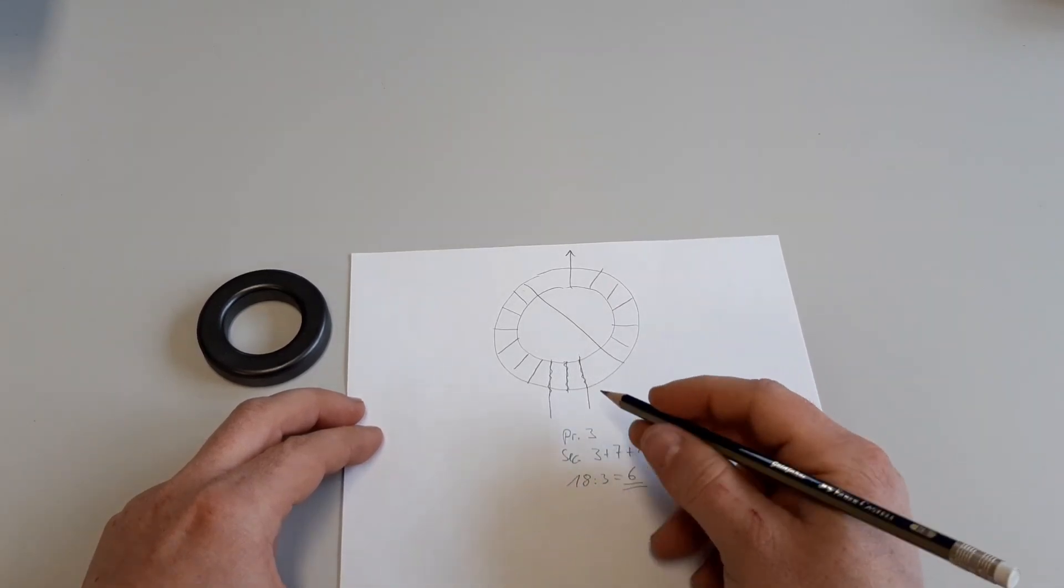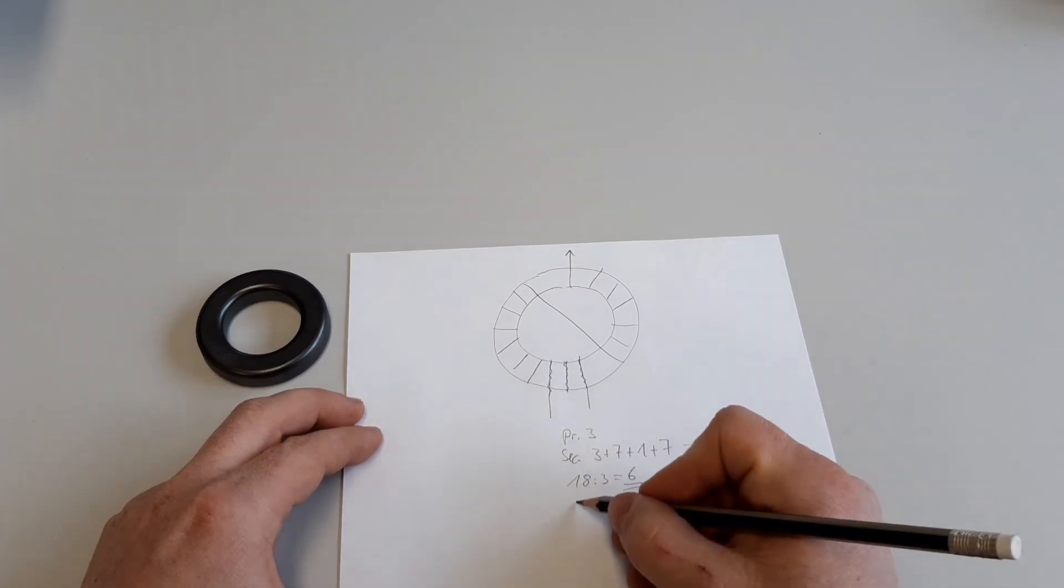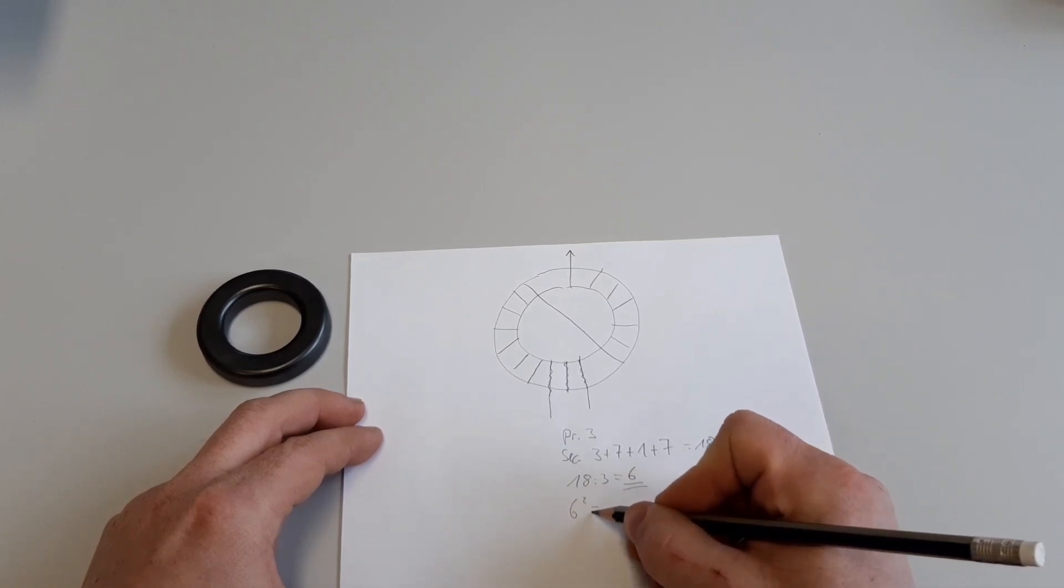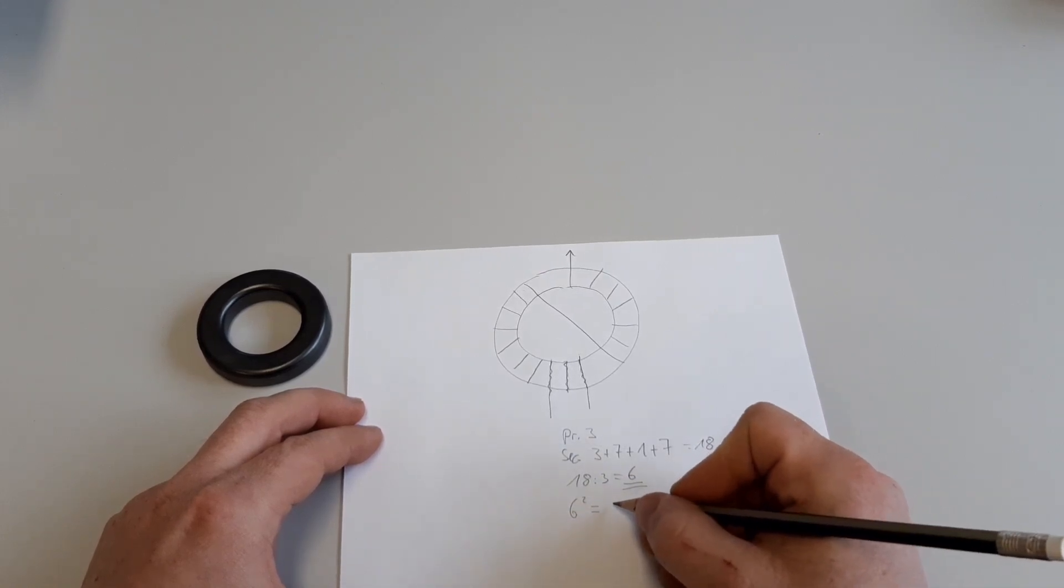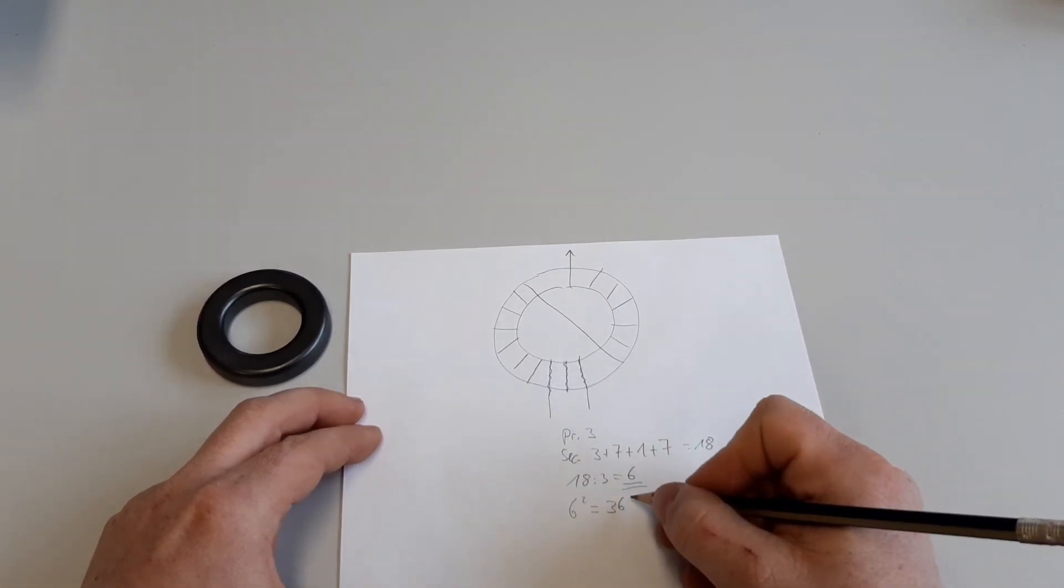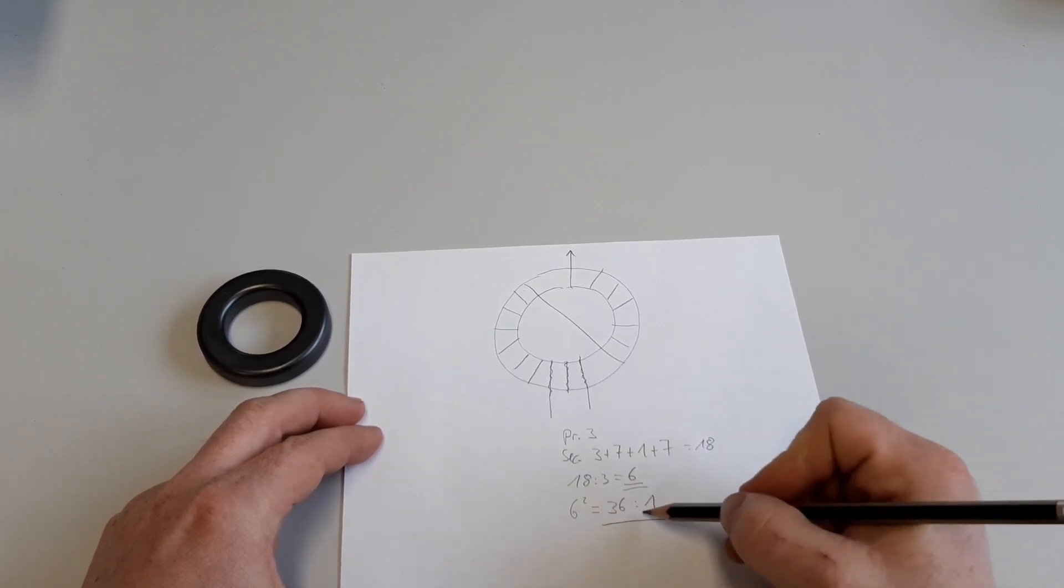To calculate the resistance or the transformation in resistance, we have to do that six in square, which equals 36 to one. That's our transformation.